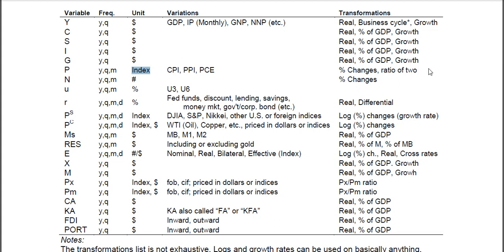Percent changes in the price level give you the inflation rate. One thing I like to do is the ratio of two price indices — for example, educational prices over normal CPI — and you can see that education rises faster than all prices. N is the employment rate, the number of workers, or the labor force. In other classes I call it L, but here it's N. This could also be monthly, and you can also calculate percentage changes.